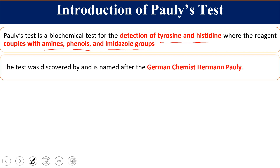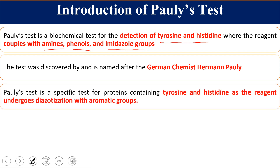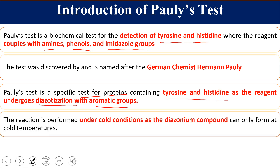This Pauly's test is named after the German chemist Hermann Pauly, who first described the reaction. Pauly's test is a specific test for proteins which contain tyrosine and histidine — it is not a test for free amino acids. We are not able to detect a single tyrosine or histidine; only when they are present in the form of proteins can we detect them. These two amino acids undergo diazotization with the aromatic groups.